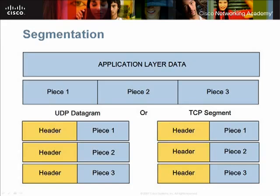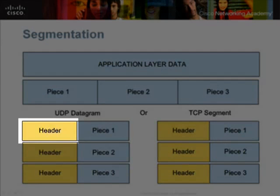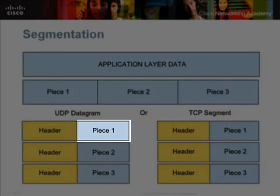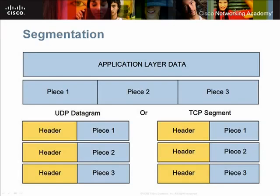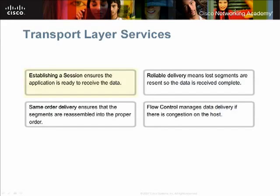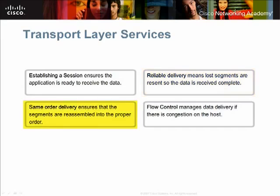To identify each segment of data, the transport layer adds a header to each segment that contains a unique number. These numbers are also used for reassembling the segments at the destination host. Protocols at the transport layer enable connection-oriented conversations by establishing a session between source and destination hosts before the data is transmitted. Reliable delivery is assured because the data is resent if it becomes corrupted or is not received by the destination. Ordered data reconstruction means that data is delivered to the application in the proper sequence.